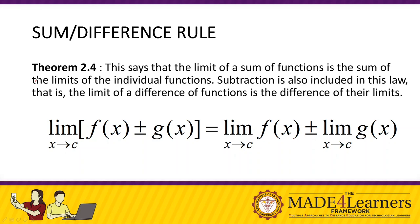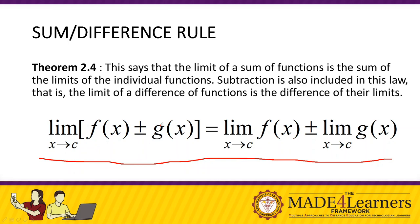Theorem number four: the Sum and Difference Rule. This says that the limit of a sum of functions is the sum of the limits of the individual functions. The same applies to subtraction — the limit of the difference of functions is the difference of their limits. Symbolically: the limit of f(x) ± g(x) as x approaches c equals the limit of f(x) ± the limit of g(x) as x approaches c. This can also be extended to more than two functions.